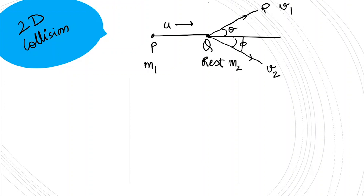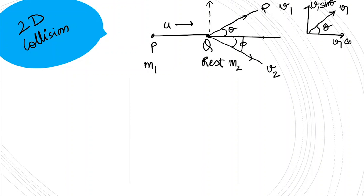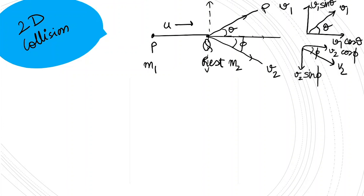We need to resolve into x and y components. For particle P: the components are v1 sin theta and v1 cos theta. For particle Q with velocity v2 making angle phi: the components are v2 cos phi and v2 sin phi. Since we are not told elastic or inelastic, we will assume the collision is elastic.